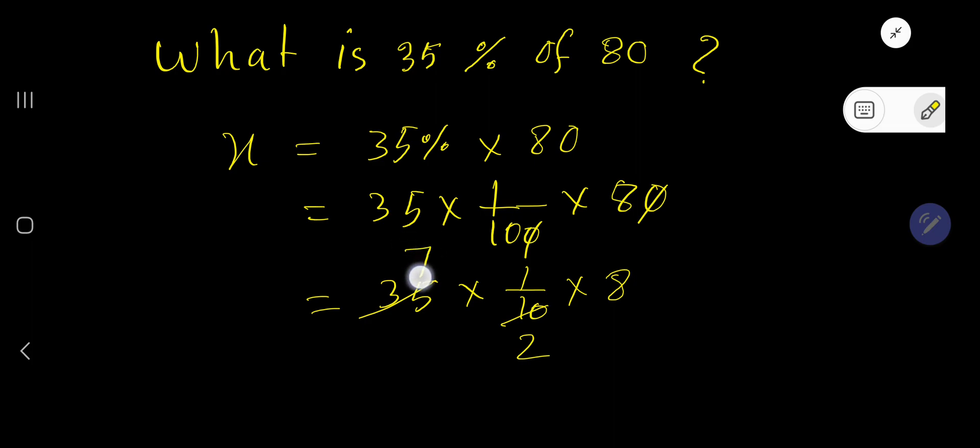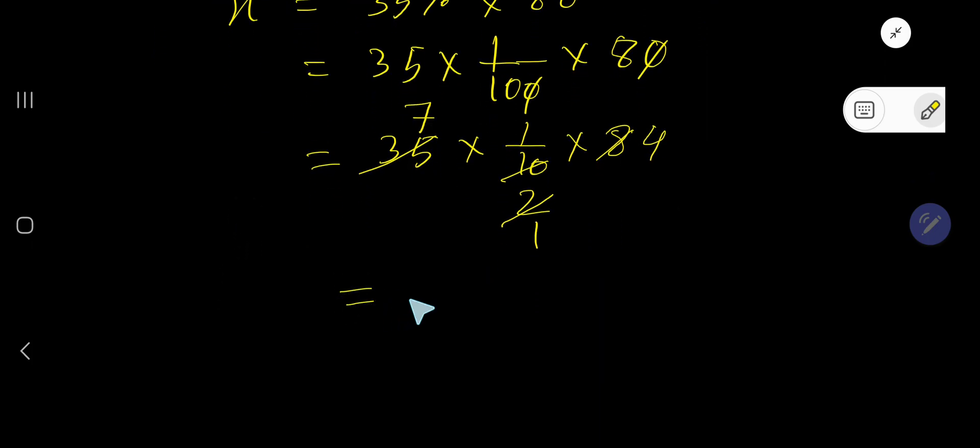Look, this is divisible by 2, this is divisible by 2. So if you divide this 2 by 2 you'll get 1, if you divide this by 2 you'll get 4. So basically you are getting 7 times 4.